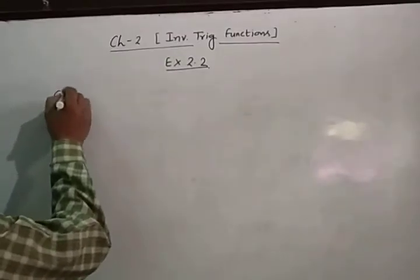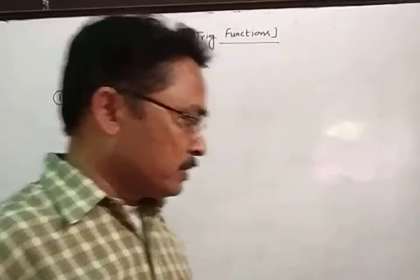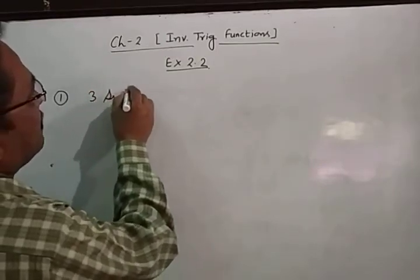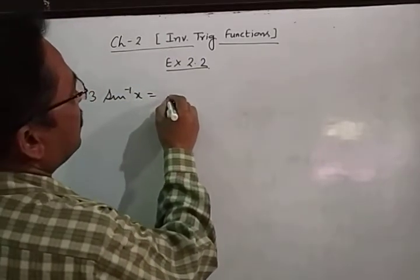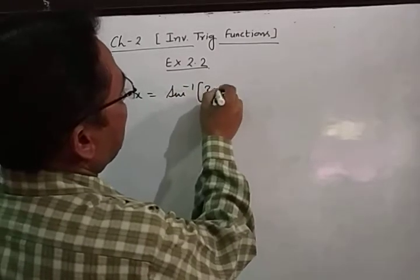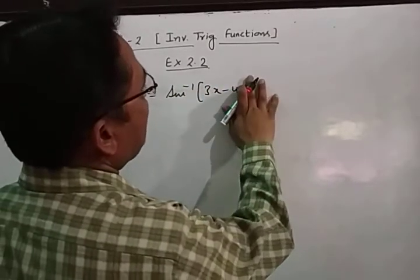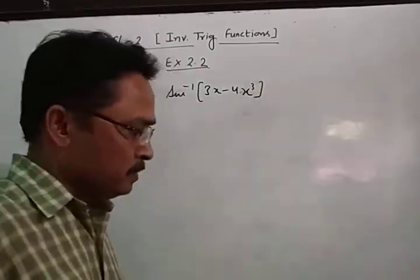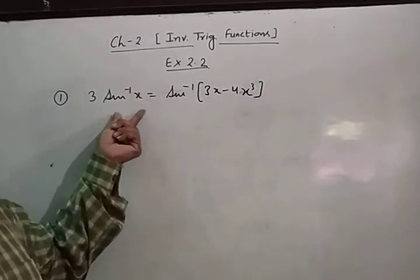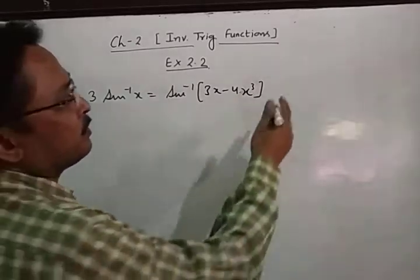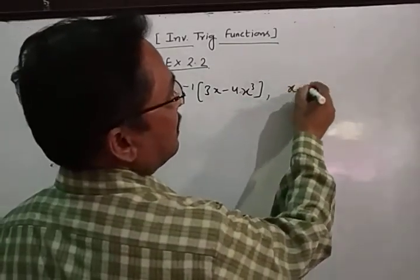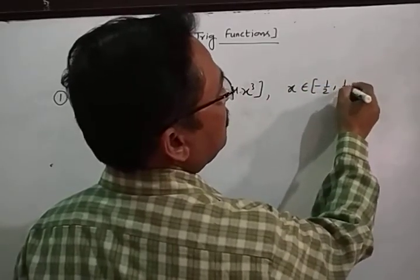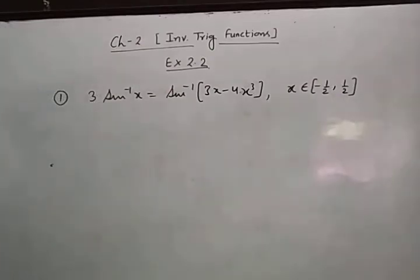First, we take Question 1: prove that 3sin⁻¹x = sin⁻¹(3x − 4x³). We have to prove this identity. It is given that x belongs to the closed interval [−1/2, 1/2].